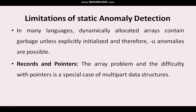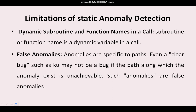Next are records and pointers. Records and pointers are directly coupled to dynamic memory allocation. In static anomaly detection these become a problem, so it is also one of the big drawbacks — these things cannot be detected at static anomaly detection. Likewise, dynamic subroutine and function names in a call are all related to runtime and dynamic behavior, so these are also not covered under static anomaly detection.